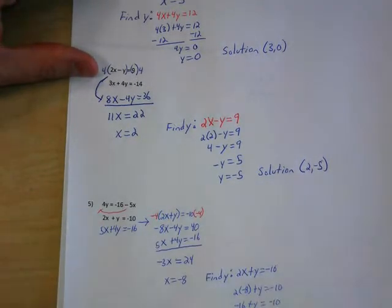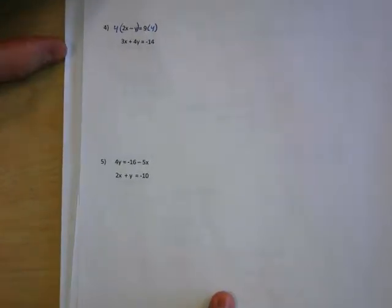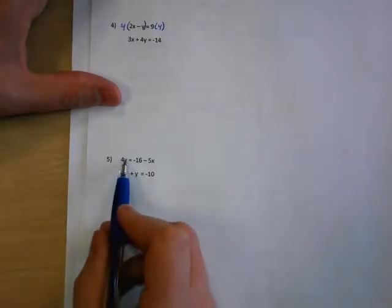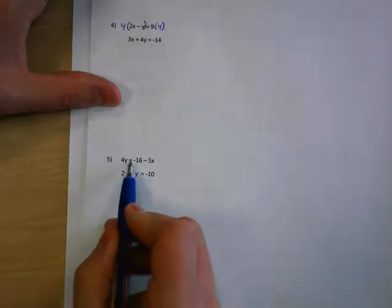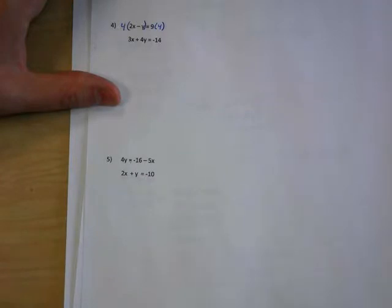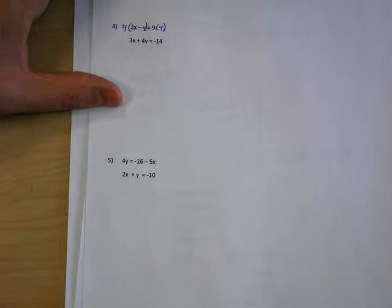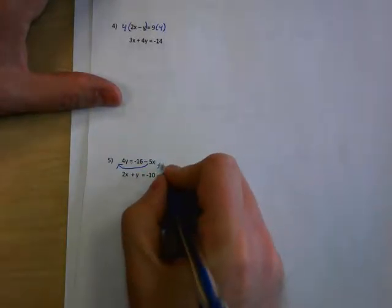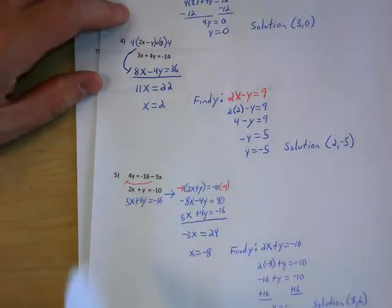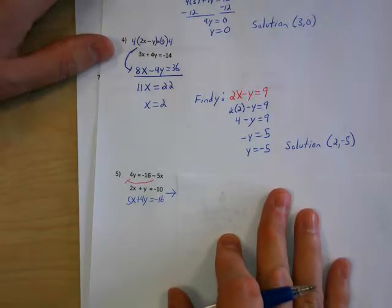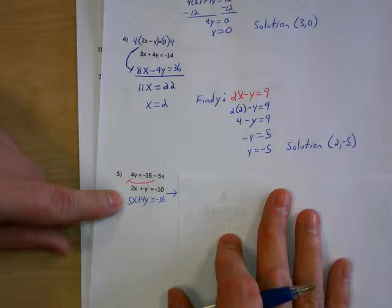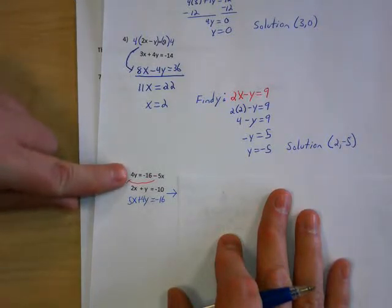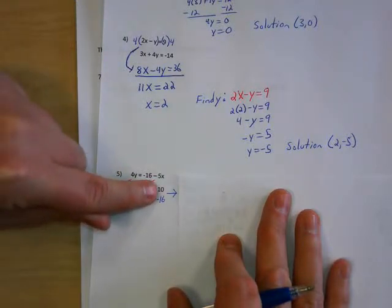Number 5 is a little more complicated. We have 4y on one side and the other equation starts with 2x, and things are not lined up — which is a problem for the elimination method. In order to use this method, we have to line them up first, by adding 5x to the other side. We end up with 5x plus 4y equals negative 16. Now the x's, y's, equals signs, and constants are all lined up.